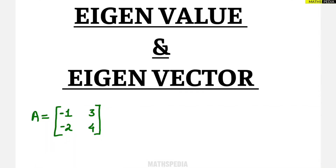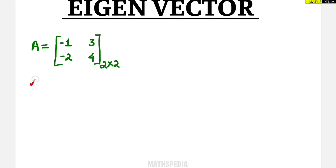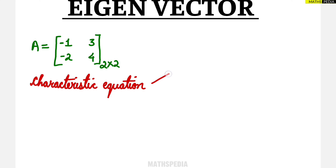In this video we are going to learn what eigenvalue and eigenvector are and how to find them for a 2×2 matrix — a square matrix having two rows and two columns. The first step is to find the characteristic equation, and from that we can find our eigenvalues, and then the corresponding eigenvectors.